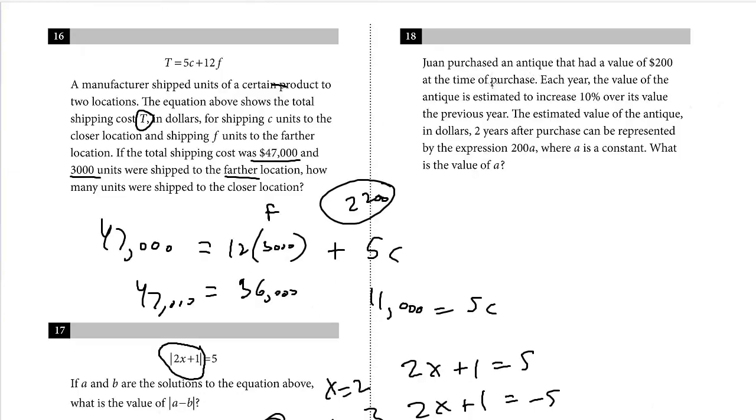Question 18. Juan purchased an antique that had a value of $200 at the time of purchase. Each year, the value of the antique is estimated to increase 10% over its value the previous year. The estimated value of the antique in dollars two years after purchase can be represented by the equation 200a where a is a constant. What is a?